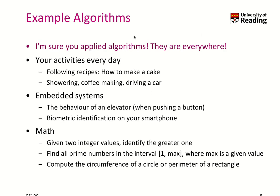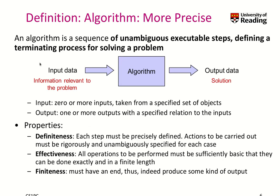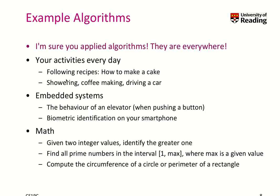Now that you've thought about this, here are a couple of example algorithms. I'm 100% sure that you have applied algorithms, because they are everywhere in our daily lives. For instance, when you follow recipes — when you cook or make a cake — you follow well-defined instructions specifying the input materials, then you run the algorithm (the recipe), and the output is typically a meal or a nice cake. Other activities like showering, coffee making, and driving a car can also be seen as algorithms.